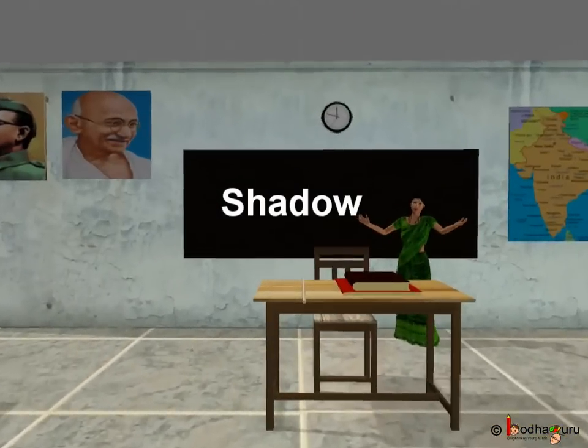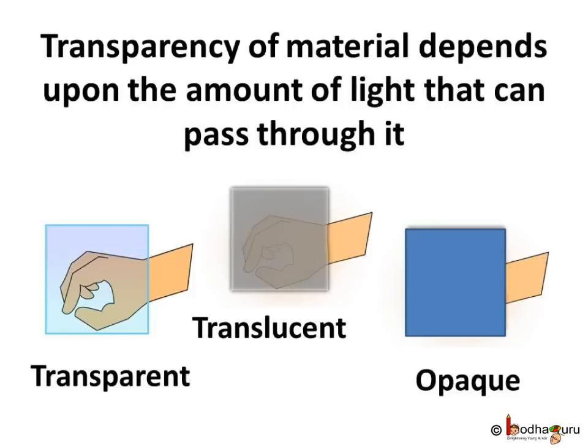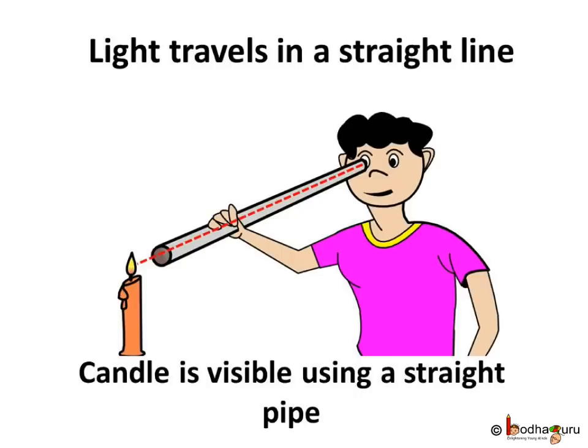Good morning kids. Today we will understand about shadows. As discussed in the previous class, we clearly know that light can pass through a transparent object clearly, it can pass through a translucent object partially, and it cannot pass through an opaque object. We also know that light travels in a straight line.